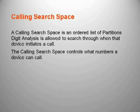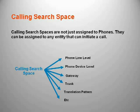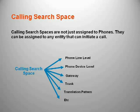A calling search space is an ordered list of partitions that digit analysis is allowed to search through when that device initiates a call. The calling search space controls what numbers an entity or device can call. For example, the calling search space assigned to my telephone controls who I can call. Calling search spaces are not just assigned to phones — they can be assigned to any entity that can initiate a call, such as a phone at a line level or the device level, a gateway, a trunk, a translation pattern, etc. In the case of the gateway and the trunk, the calling search space that you assign dictates the rights that any incoming calls from the PSTN or from other clusters have. If you do not assign the gateways or trunks a calling search space, all incoming calls from the PSTN or from other clusters will only have rights to call numbers in the null partition.